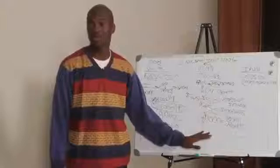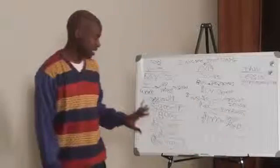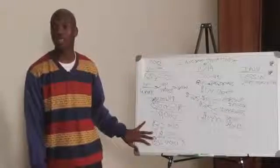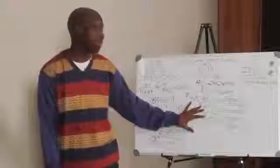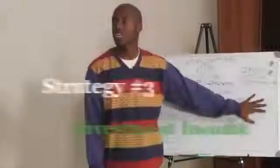As you refer to strategy two, you can start taking the cash flow money from strategy one, the business income from strategy two, and strategy three is investment income.